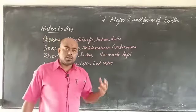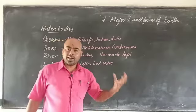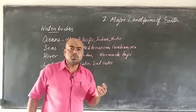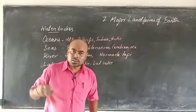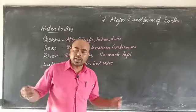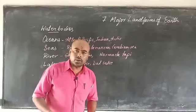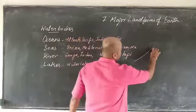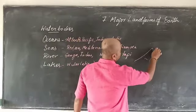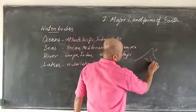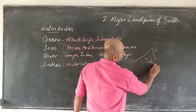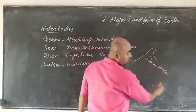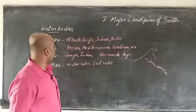Now next is rivers. When water is accumulated in a highland — they are gathered and form small streams, and those small streams get together to form a river. When rainfall occurs in a highland, the small streams combine and form a river.